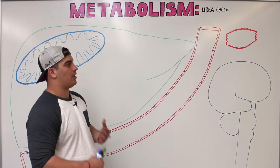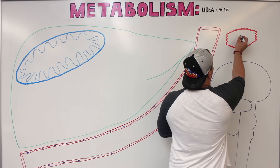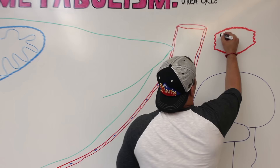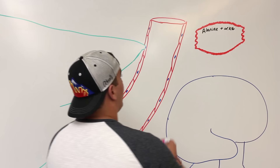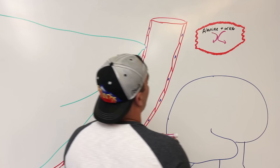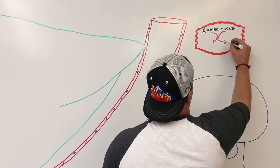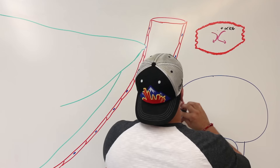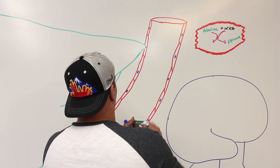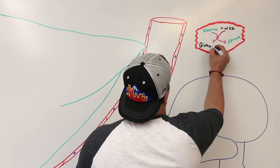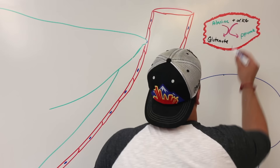Inside of the muscle we have a specific amino acid — alanine — which was combining with a keto acid called alpha-ketoglutarate. Alpha-ketoglutarate and alanine were reacting, and you formed two different things: alanine gets converted into pyruvate, and alpha-ketoglutarate gets converted into glutamate. This reaction is driven by the enzyme alanine aminotransferase, or ALT, and this is a reversible pathway.